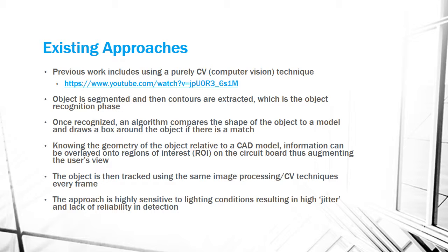Previous work includes using a purely CV technique, with a link to a video of this technique from a prior course shown below. The object is segmented and contours are extracted in the object recognition phase. An algorithm then compares the shape to a model and draws a box around the object if there is a match. Knowing the geometry relative to a CAD model, information can be overlaid onto regions of interest on the circuit board, augmenting the user's view. The object is tracked using the same image processing techniques every frame, but the approach is highly sensitive to lighting conditions, resulting in high jitter and lack of reliable detection.